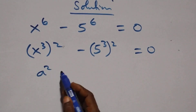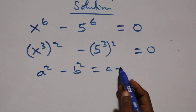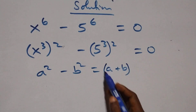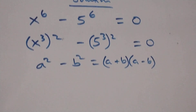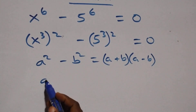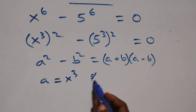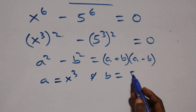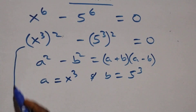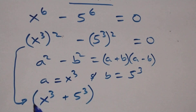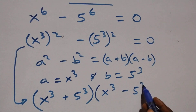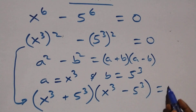This follows when we have a squared minus b squared, which is written as a plus b into bracket, open bracket, a minus b. Here, a stands as x raised to power 3 and b stands as 5 raised to power 3. So all we have becomes x raised to power 3 plus 5 raised to power 3, then open bracket x raised to power 3 minus 5 raised to power 3, close bracket, equals 0.